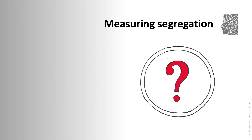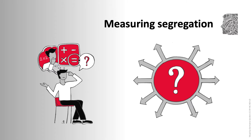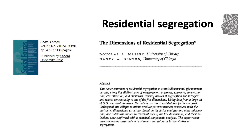So you know what segregation is, but how do we go about measuring it? You'd think it should be fairly straightforward, but actually it isn't. There are lots of different ways to think about the type of segregation and ways to measure it. Back in the 1980s, two American researchers, Douglas Massey and Nancy Denton, wrote a paper exploring the 20 most commonly used measures and how they were related to each other.